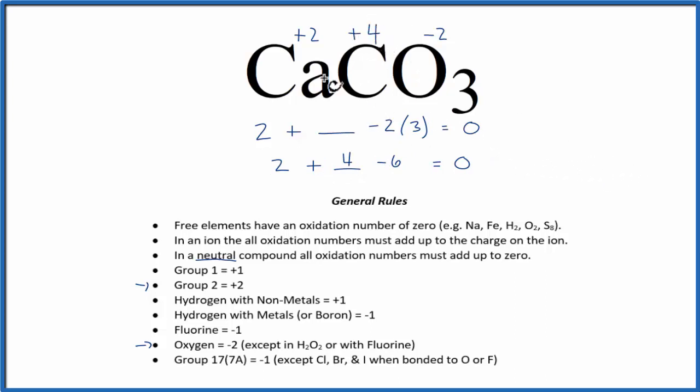So to recap, we found the oxidation numbers for the elements we knew, and then because we have a neutral compound, we knew it would add up to 0. That allowed us to find the oxidation numbers for the carbon here in CaCO3.